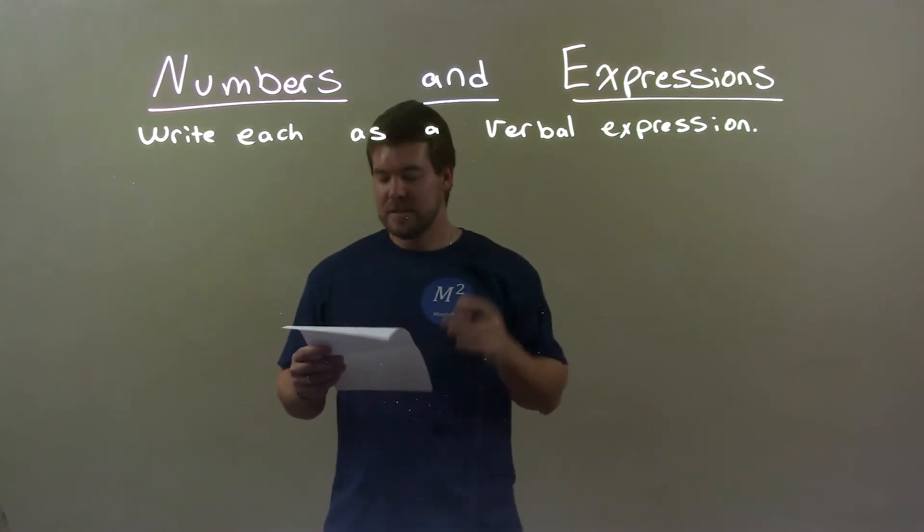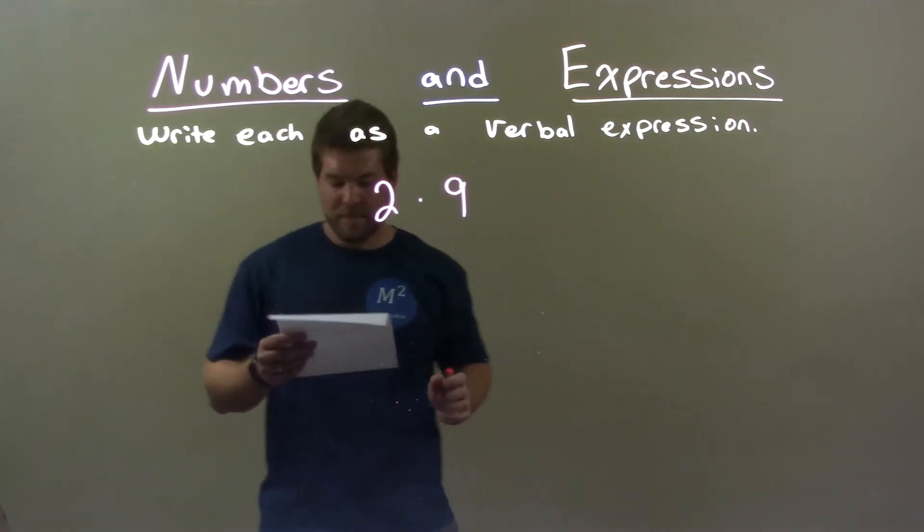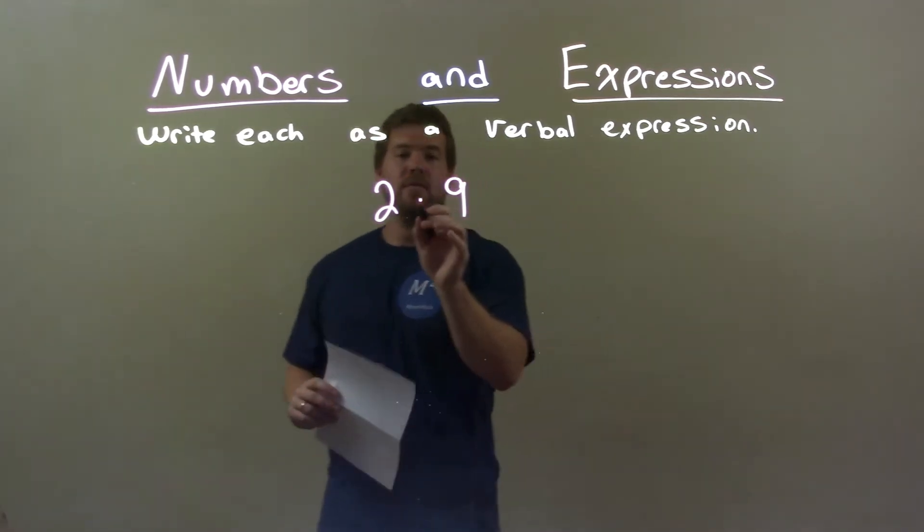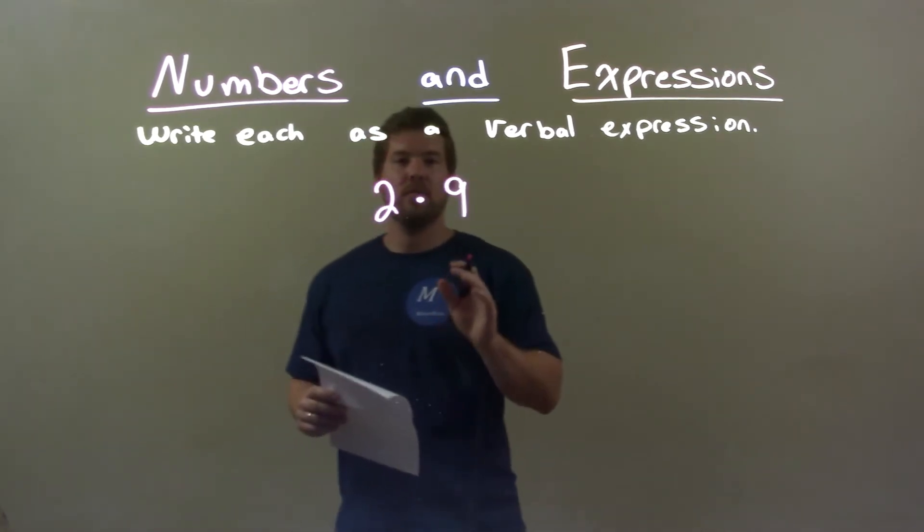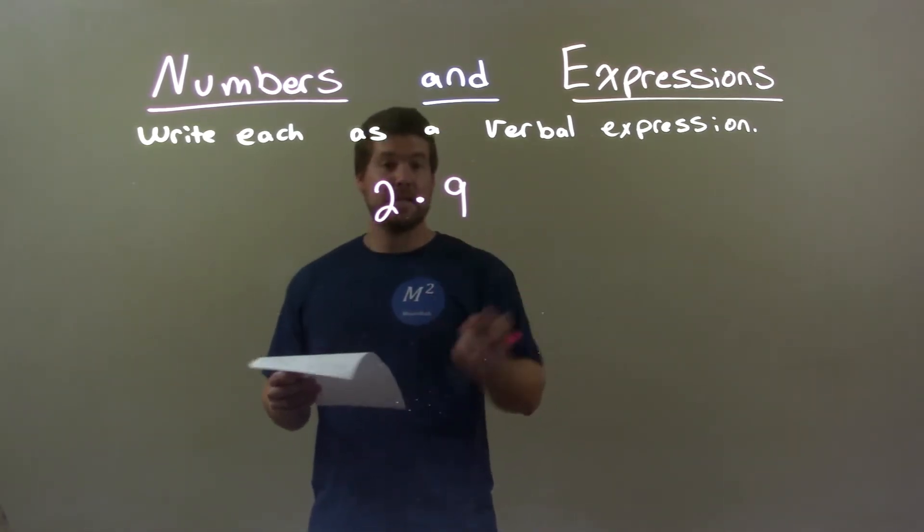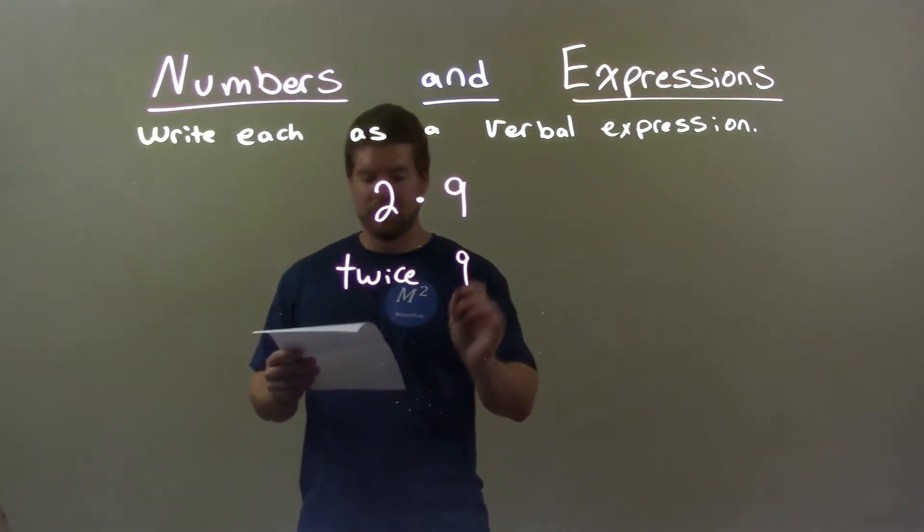If I was given this problem here, 2 times 9, there's many ways to write this. But the way I'm going to choose to write it here is we take 9 and we have twice that. So we're twice 9. So here we're going to have twice 9. And that's it.